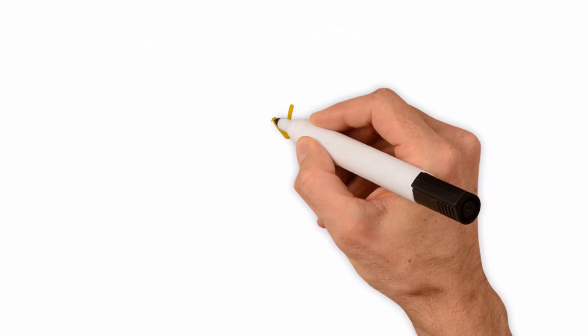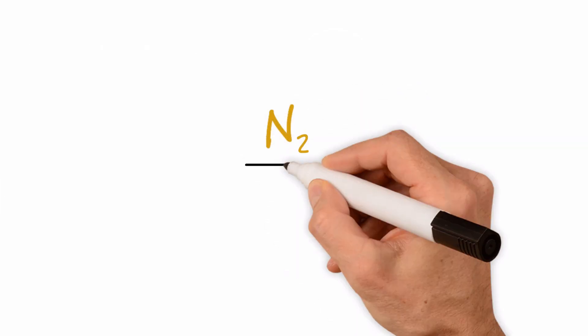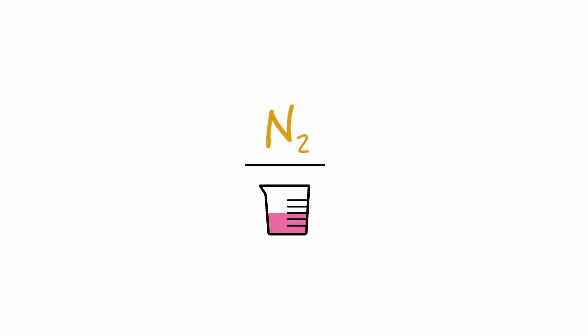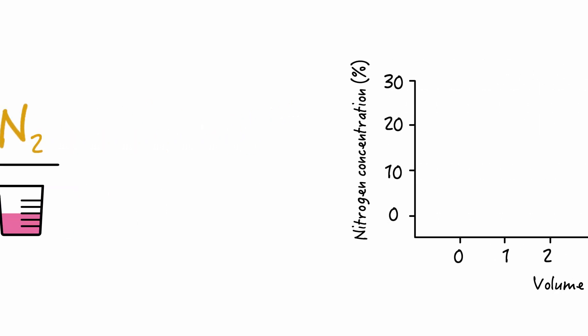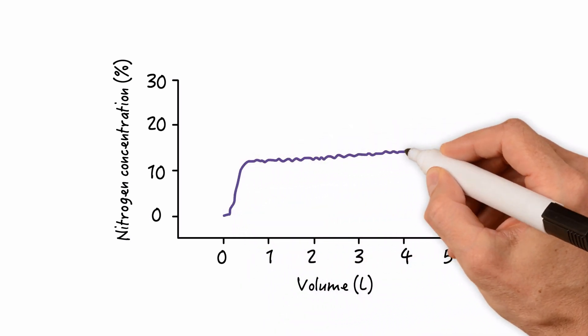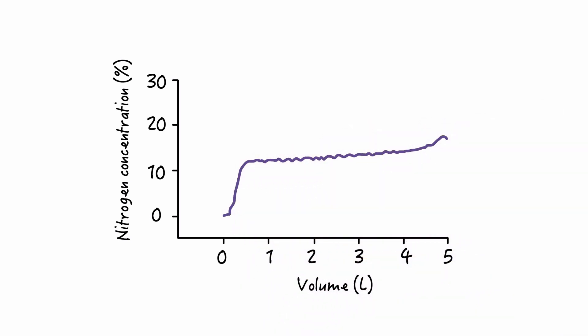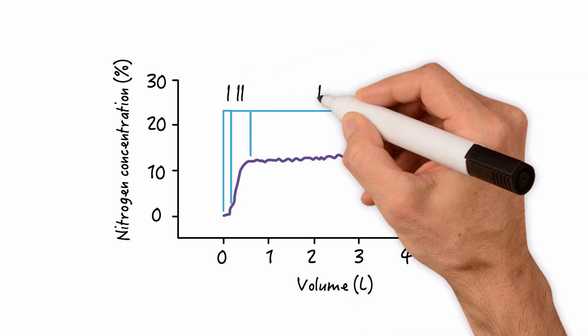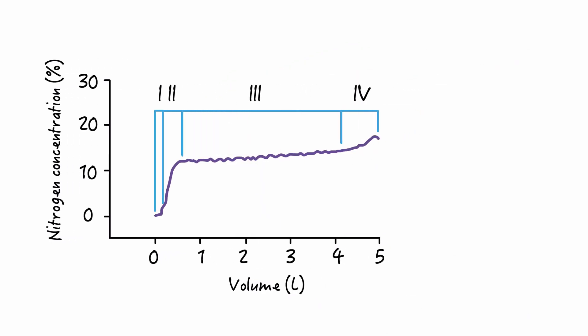A plot of exhaled nitrogen concentration versus exhaled volume is generated. A typical plot appears as follows. Four relatively discrete phases of the curve, 1, 2, 3, and 4, are depicted.